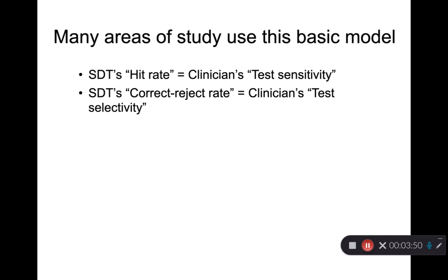This basic model is used in many research areas. For example, what I'm calling the probability of a hit — given the patient has it, what's the probability I say yes — a clinician will call test sensitivity. And what I'm calling the probability of a correct no answer, the correct reject rate, they'll call test specificity.